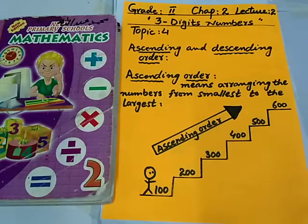Good morning students of grade 2. This is our second lecture of chapter 2, three digit numbers. Children, today I explain you topic 4, ascending and descending order. You already learned ascending and descending order in chapter 1, but today I will revise.